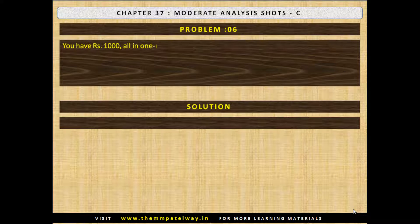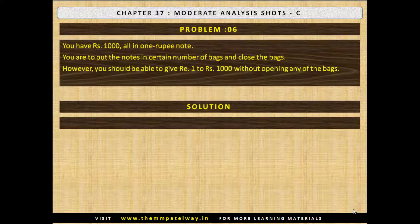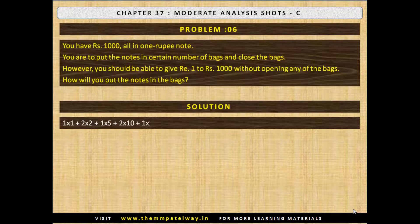Problem No. 6. You have Rs. 1000 all in 1-rupee notes. You have to put the notes in a certain number of bags and close the bags. However, you should be able to give Rs. 1 to Rs. 1000 without opening any of the bags. The solution: put Rs. 1 in 1 bag, Rs. 2 in 1 bag, Rs. 5 in 1 bag, Rs. 10 in 2 bags, Rs. 20 in 1 bag, Rs. 50 in 1 bag, Rs. 502 in 1 bag, and Rs. 100 in 9 bags — keeping Rs. 1000 in 17 bags total.